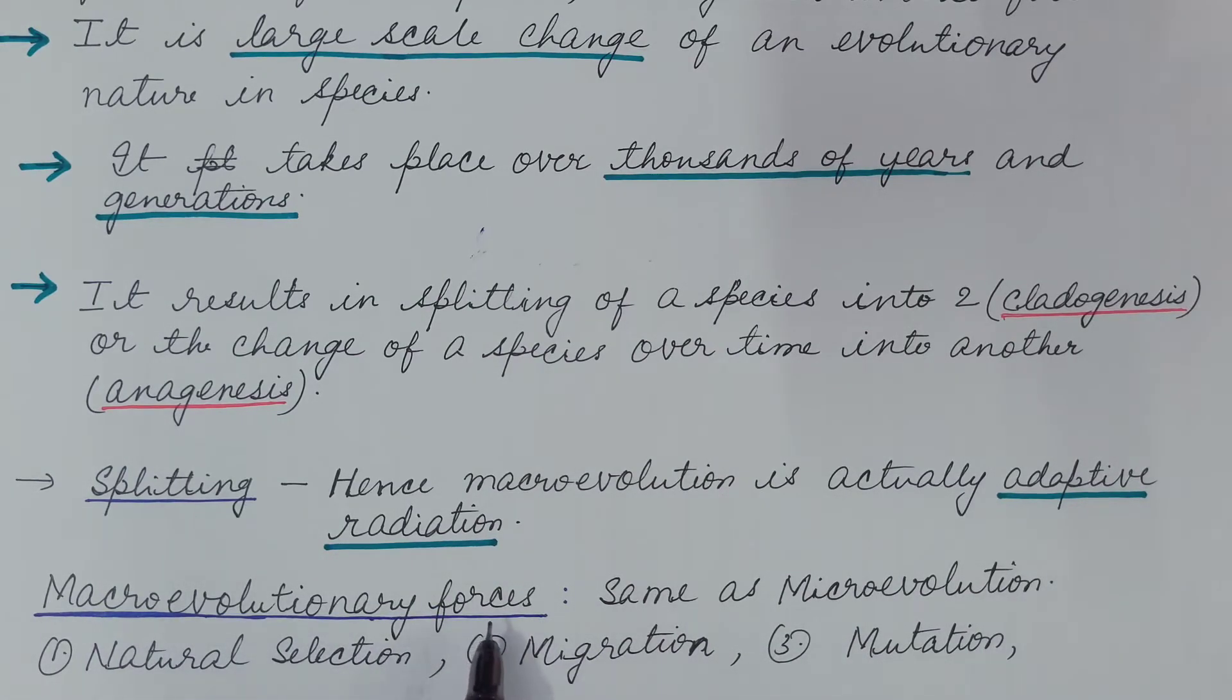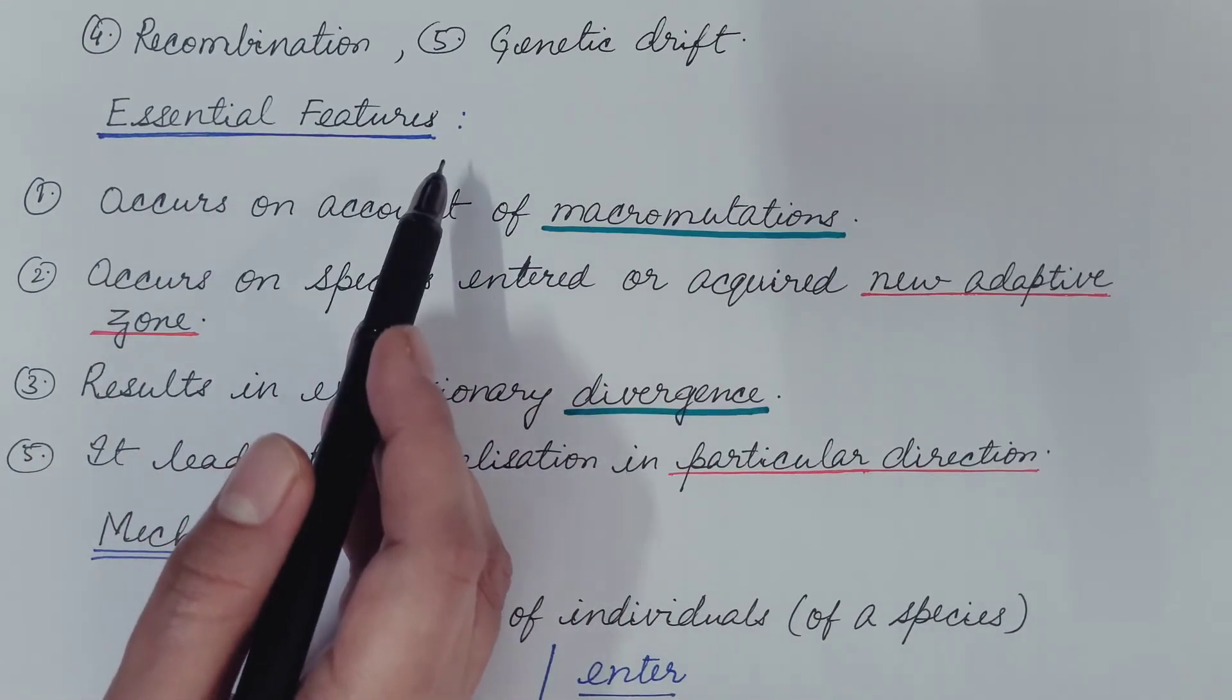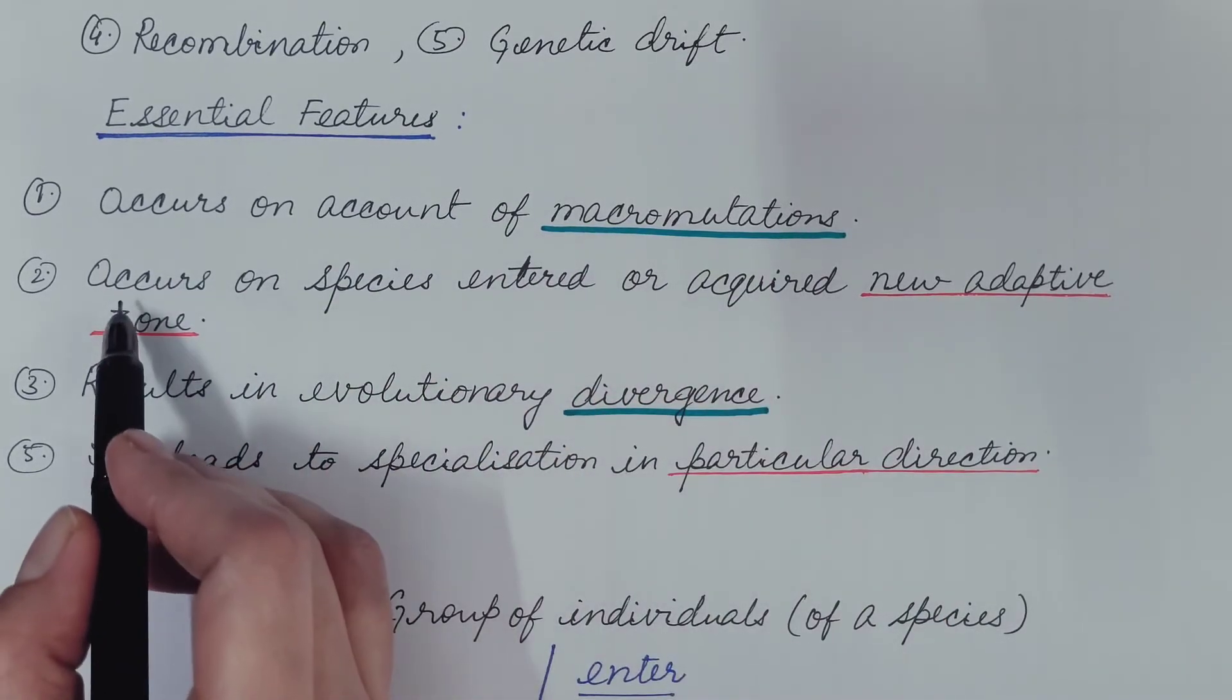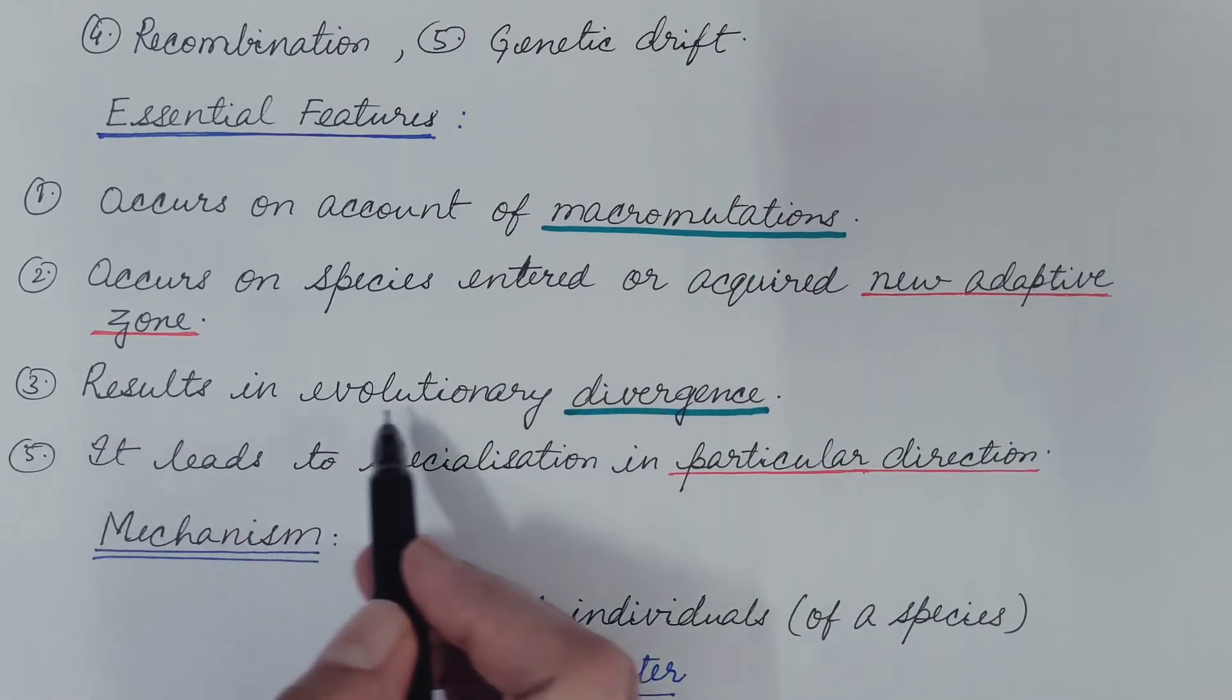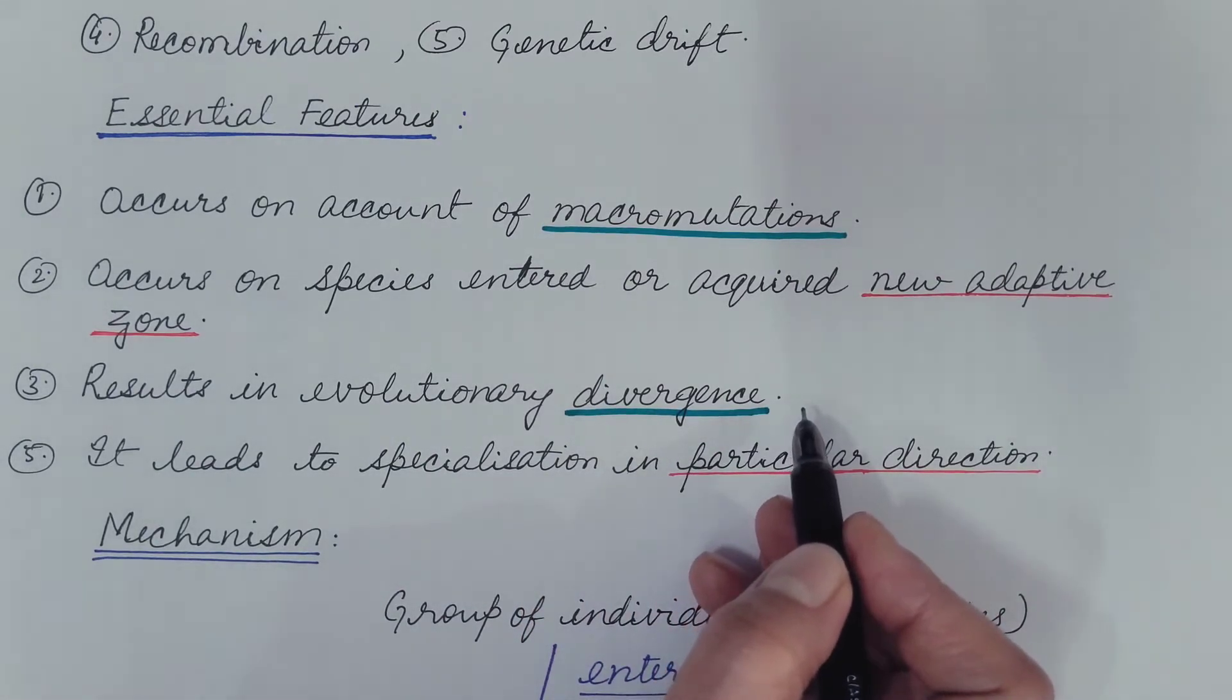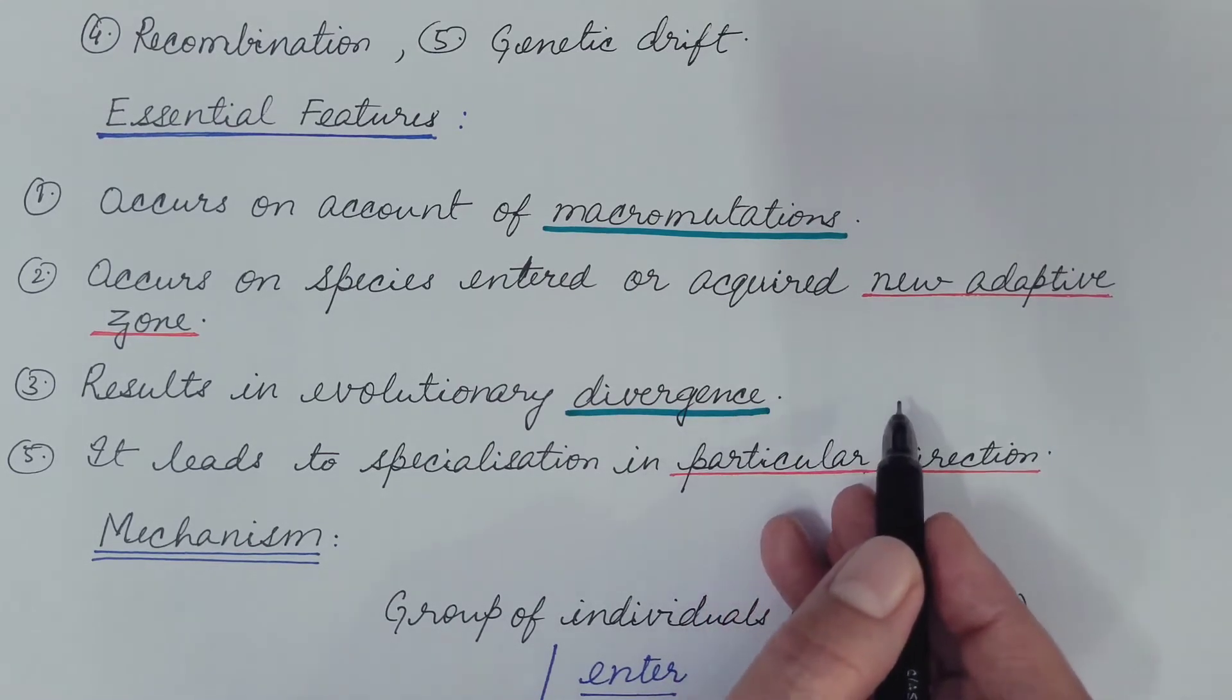Macroevolutionary forces are the same as microevolutionary forces. These involve natural selection, migration, mutation, recombination and genetic drift. Now let us see the essential features of macroevolution. Macroevolution occurs on account of macromutations. It occurs on species that has entered or acquired new adaptive zones. It results in evolutionary divergence that is splitting of the pre-existing species into two or more species or above species level. It leads to specialization in particular direction.